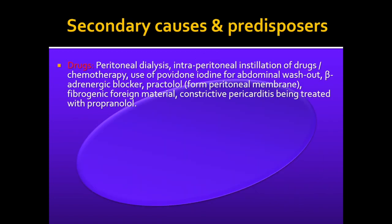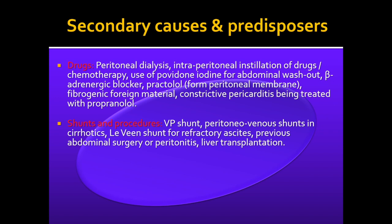Coming to secondary causes, the most common cause is drugs. Peritoneal dialysis with multiple drugs is one of the most important causes. Intraperitoneal installation of drugs and chemotherapy, use of povidone iodine for abdominal washout, beta adrenergic blockers, and practolol can incite peritoneal inflammation. Shunts and procedures such as VP shunt, peritoneovenous shunt, LeVeen shunt for refractory ascites, previous abdominal surgery, liver transplantation and multiple other surgeries are also important causes.